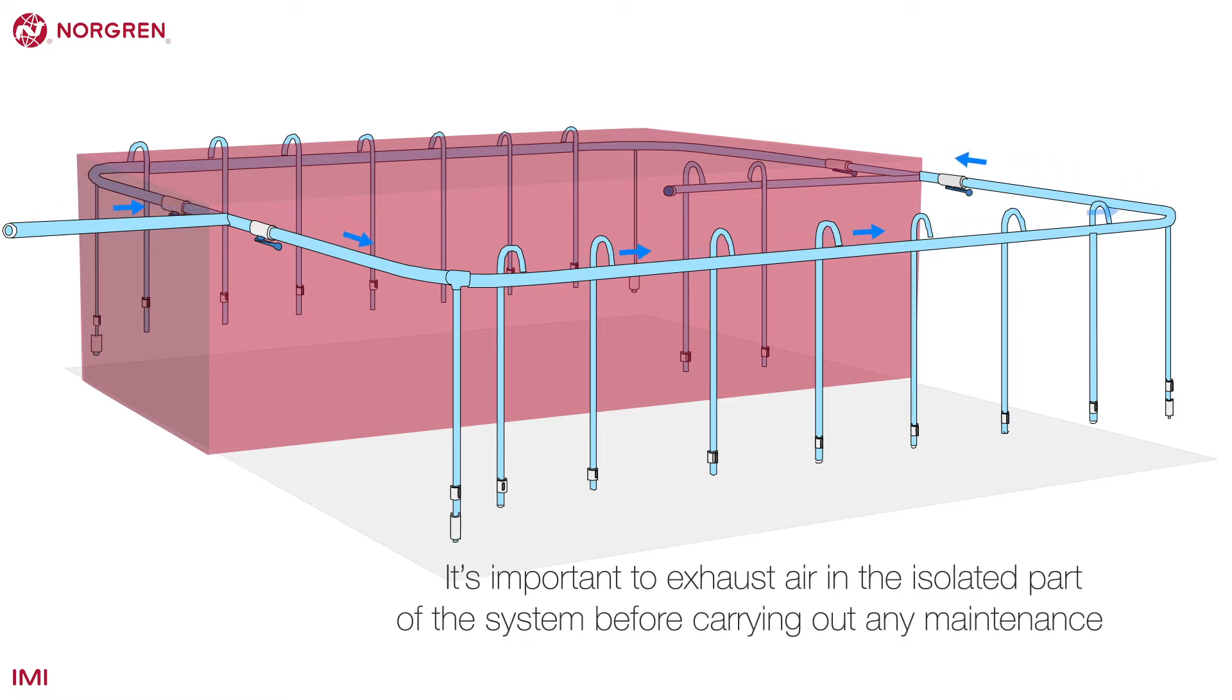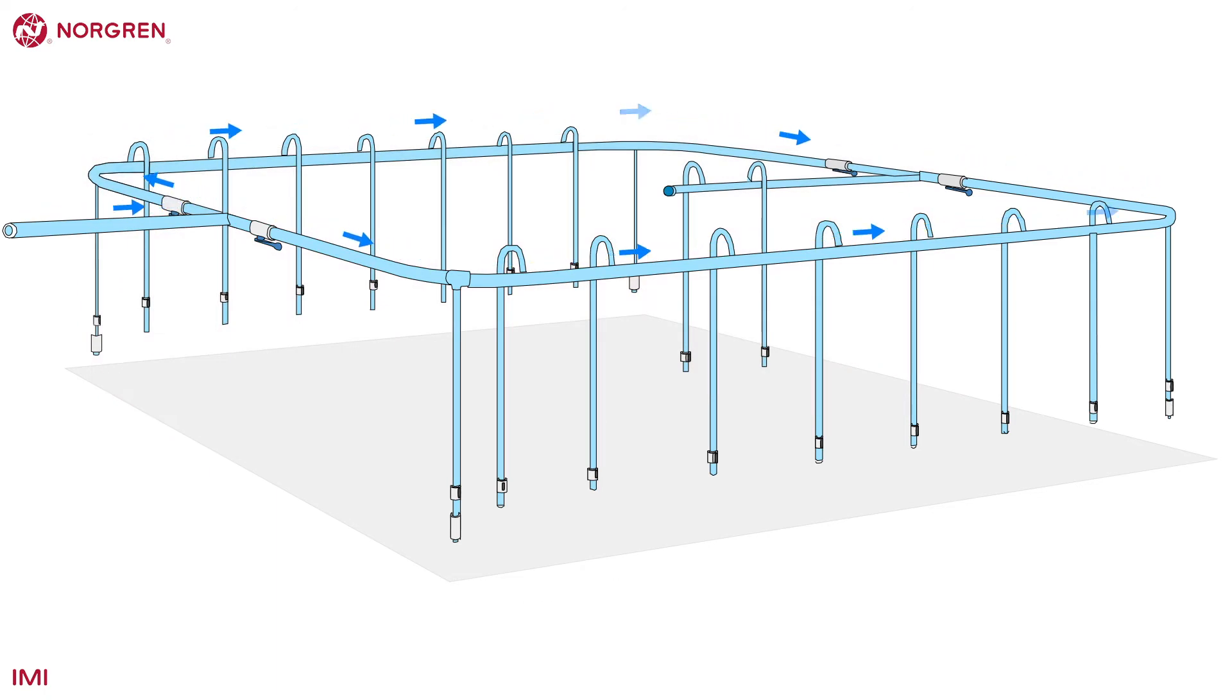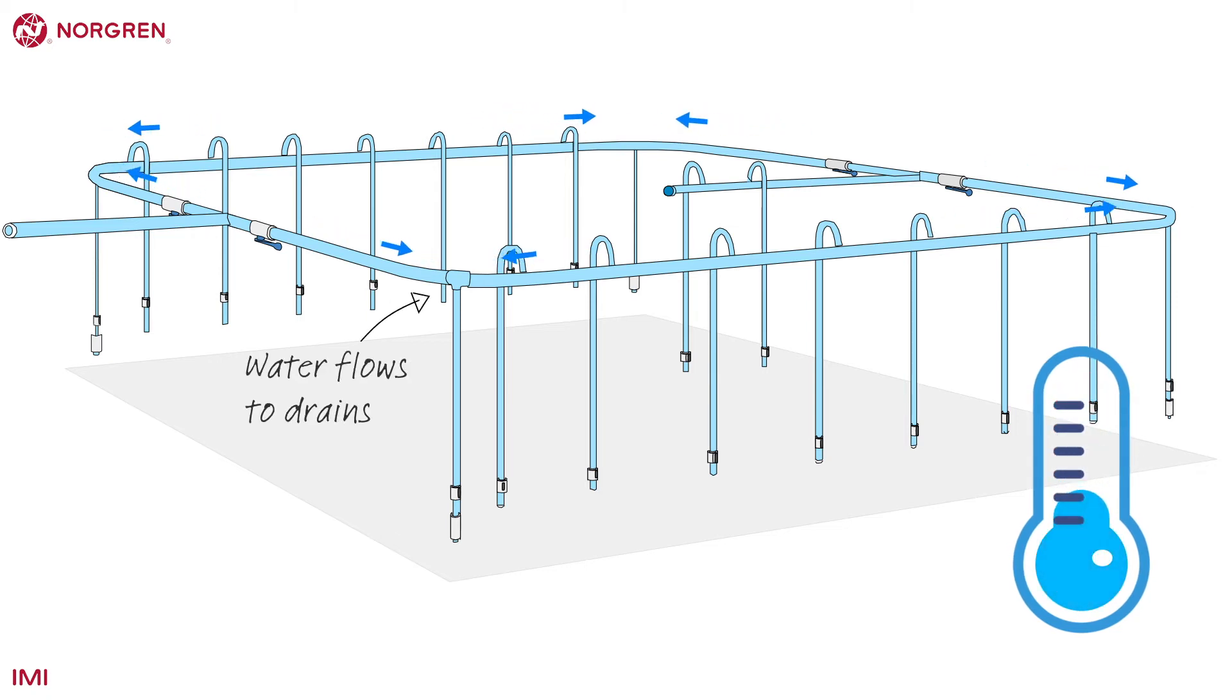It's important to exhaust air in the isolated part of the system before carrying out any maintenance. The ring main will slope to the corner, allowing any water that forms should the temperature drop to flow toward the drains.